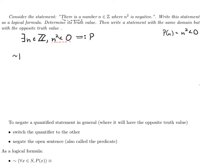The negation of P — well, this statement is indeed false. There isn't a number n in the integers where the square is negative. See if you can reword that using a different quantifier.